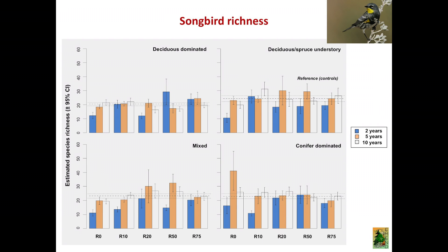For songbird species richness, the story is more or less similar to carabid beetles. In some forest cover types, species richness increases above the reference controls, whereas in others and in certain treatments it's the reverse. This starts making us think that different assemblages respond differently to harvesting, and this response is also a product of the forest cover type where these assemblages thrive — a complex interaction between disturbance and pre-disturbance conditions.